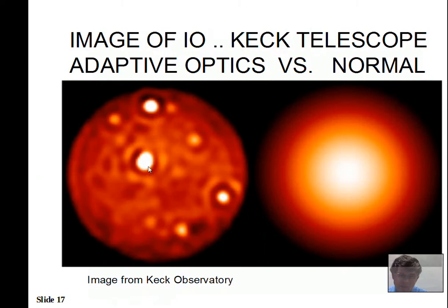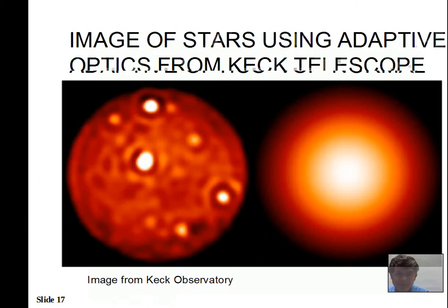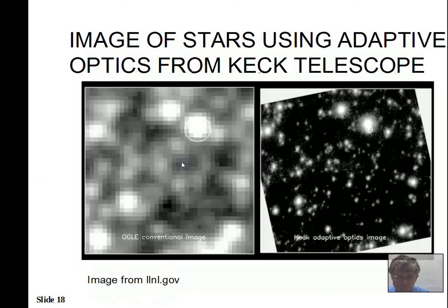Adaptive optics allow Earth-based telescopes to produce more detailed images than the Hubble Telescope, but only for a very small region of the sky. Hubble can take detailed images over a larger sky area, so adaptive optics don't replace it. Comparison images show without adaptive optics versus with adaptive optics — with it, separated objects are clearly resolved and much more detail is visible on the sky.